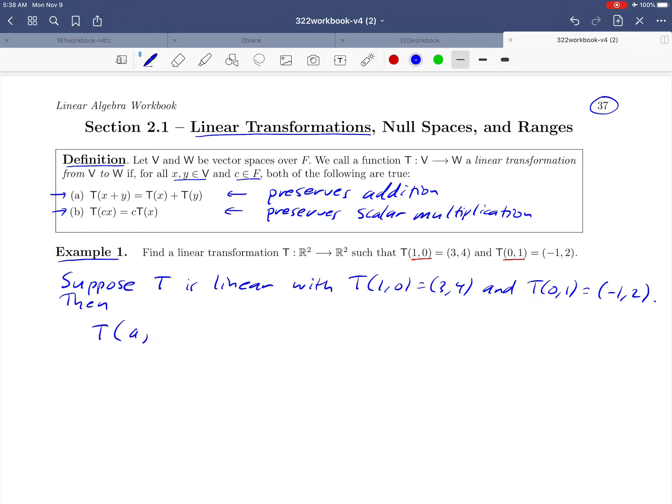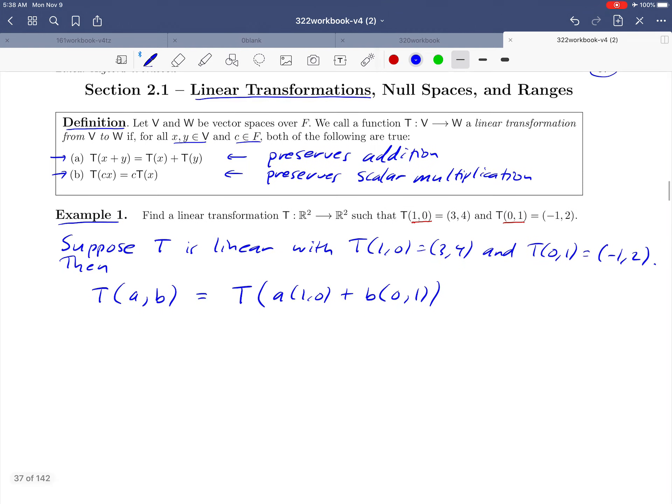We can actually use this as a way to figure out what T of (a, b) is for any vector (a, b) in R² by making the observation that (a, b) can be written as a times (1, 0) plus b times (0, 1). And the reason that that is significant is that we made the assumption that T is linear, which means that we can go back up to our definition up here and use the two properties in the definition starting with this one.